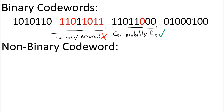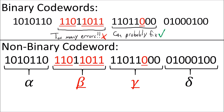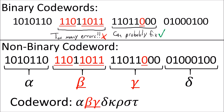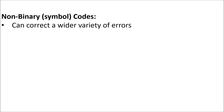In the world of non-binary codewords, we would treat all of these bits as a sequence of four symbols: alpha, beta, gamma, and delta. A symbol is considered to be an error if any of its interior bits has an error. So here, the symbols alpha and delta are fine, but the symbols beta and gamma are errors. But if these two error symbols, beta and gamma, are just two symbols in a larger codeword made of symbols, it is possible that we could correct the errors, since only a couple of the symbols in the codeword went wrong. The advantage of using symbols instead of binary bits is that symbols can let us correct a wider variety of errors.